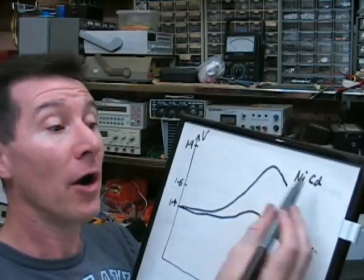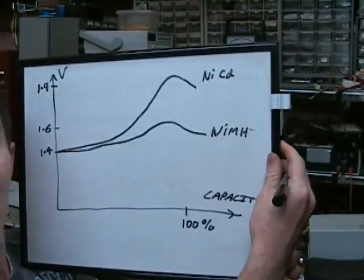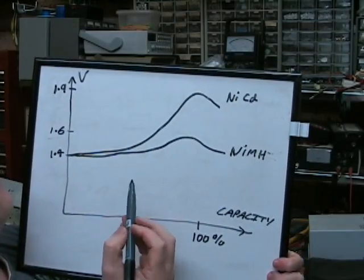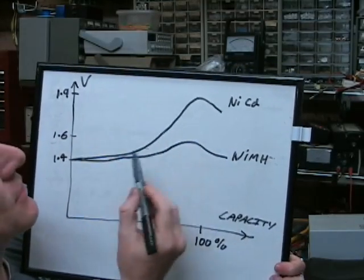Now the two major types of rechargeables as I said are NiCad and nickel metal hydride. And I've drawn a charging graph here. This is a pretty standard chart you'll find. And this is the two different types.